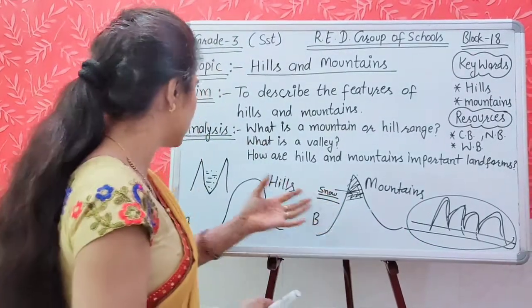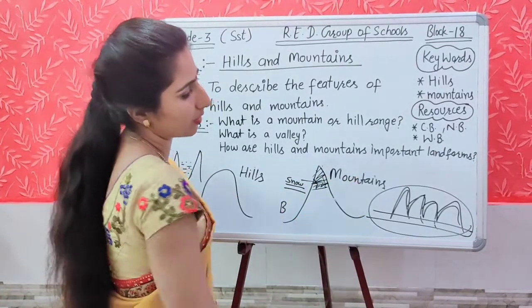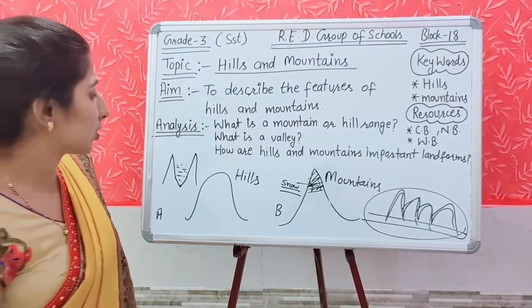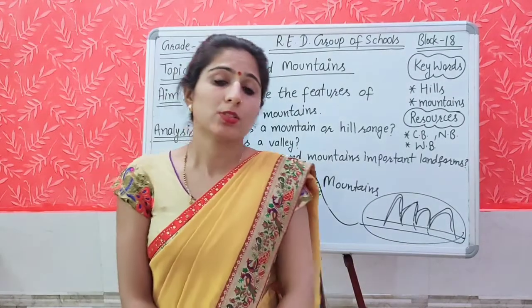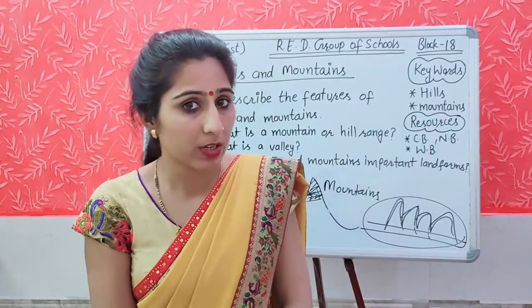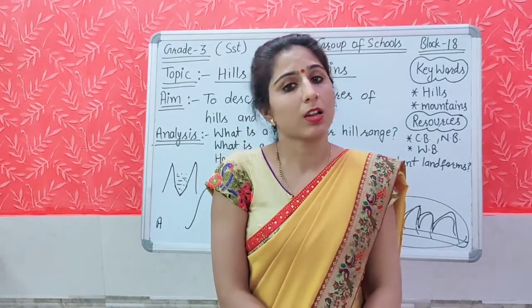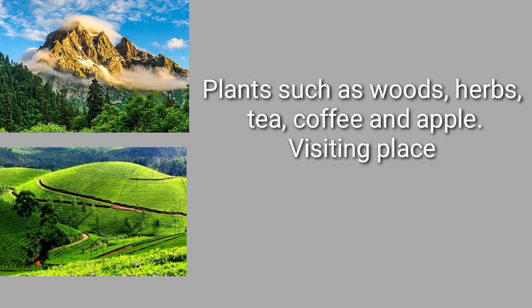How are hills and mountains important landforms? Have you ever thought about this? These are important landforms because of the plants which grow on these mountains and hills. These plants give us wood, herbs, and other products, as you can see in this picture.